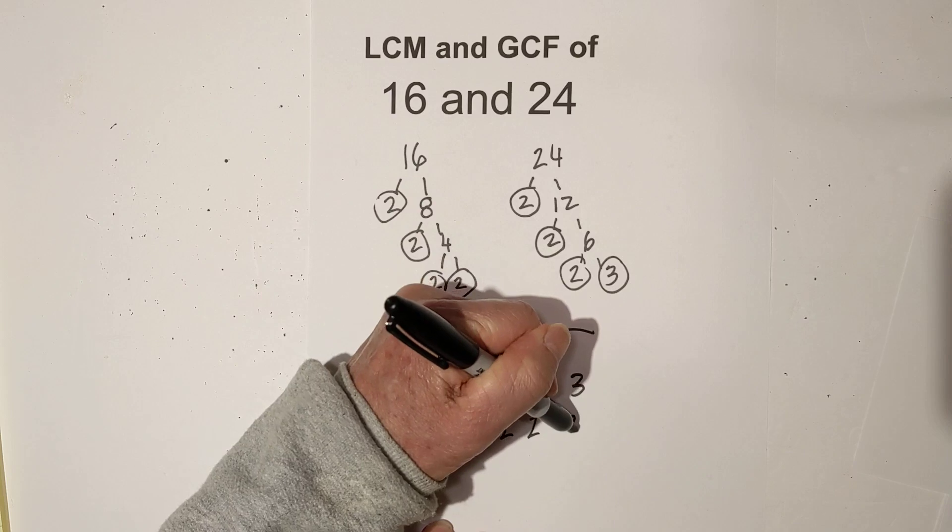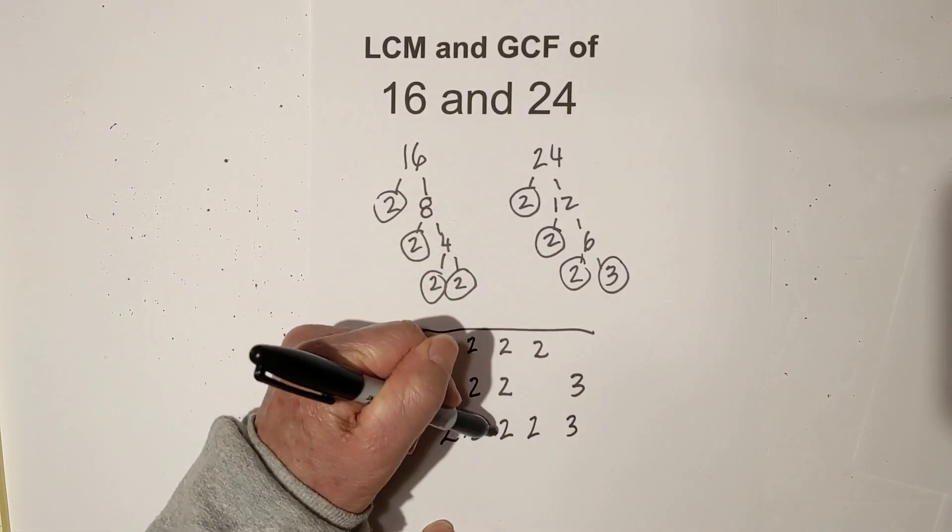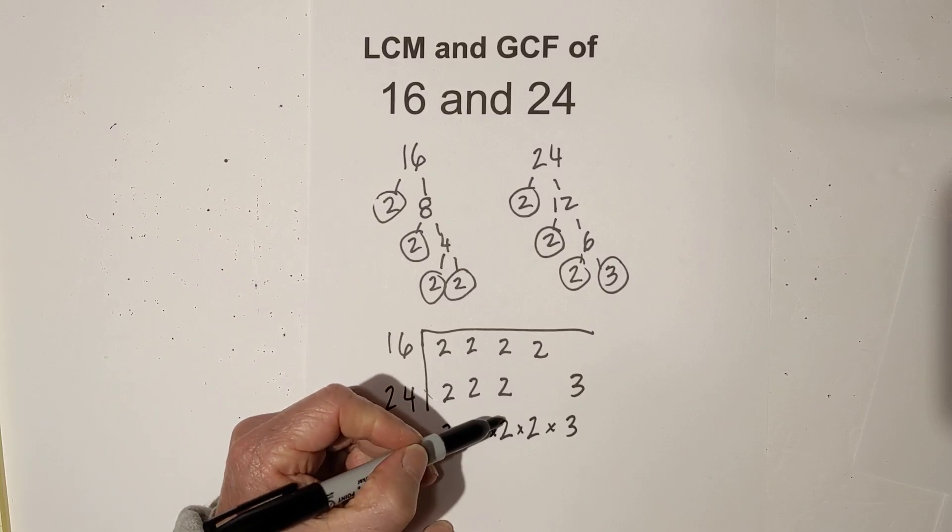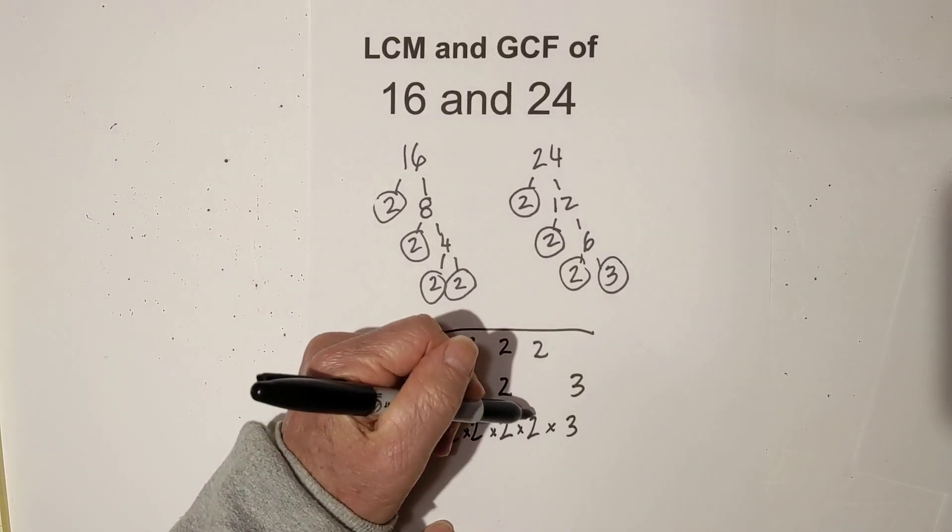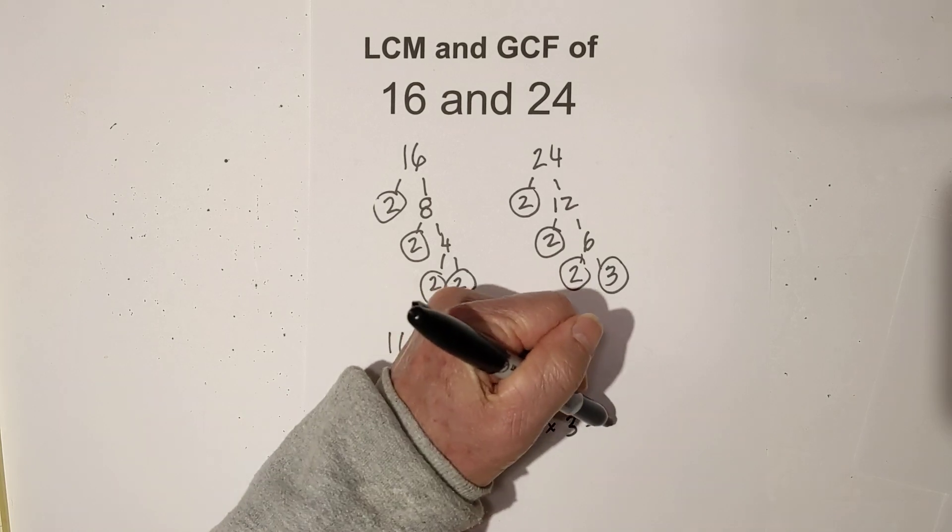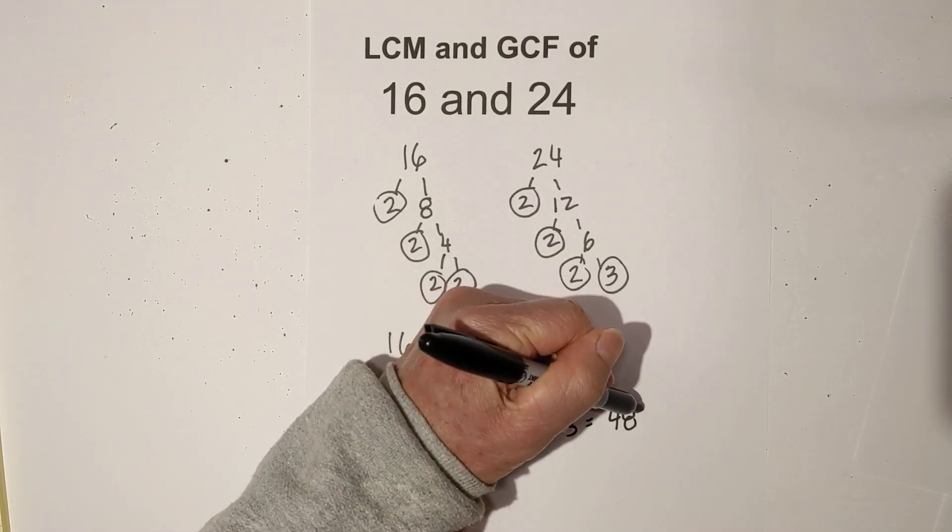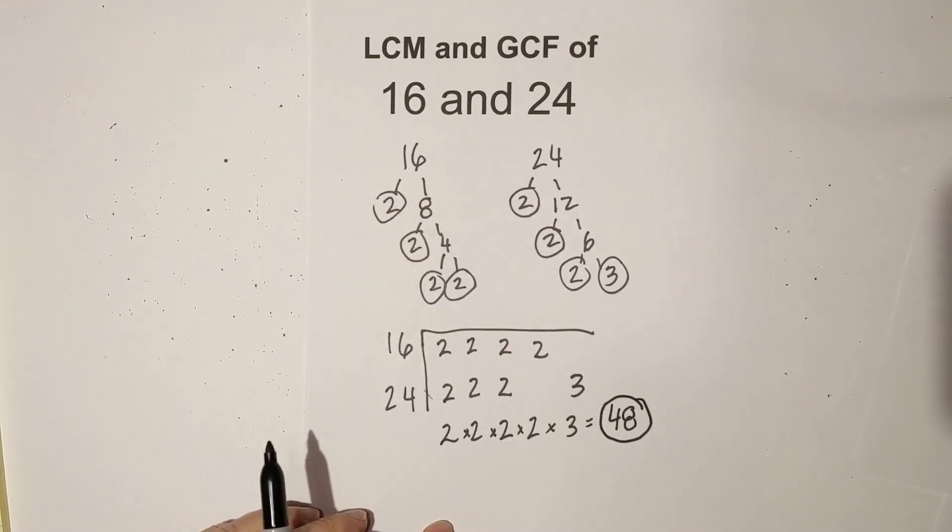And then the 3. Then you just multiply these together, so that's 2 times 2 is 4, 4 times 2 is 8, then that's 16, and then 16 times 3 is 48. So the LCM is 48.